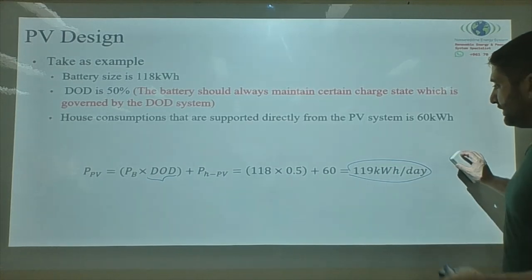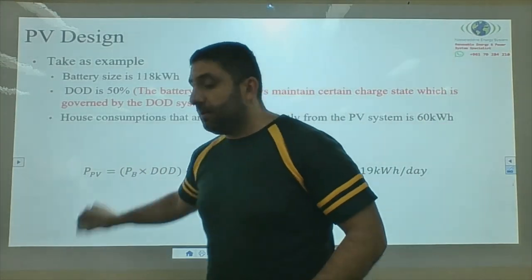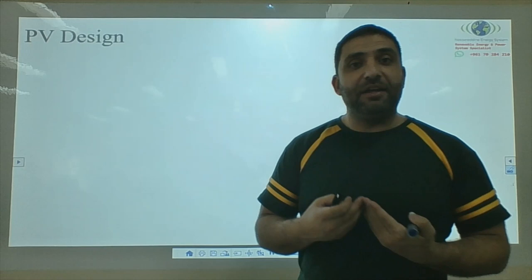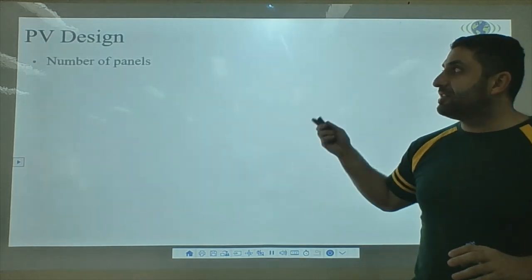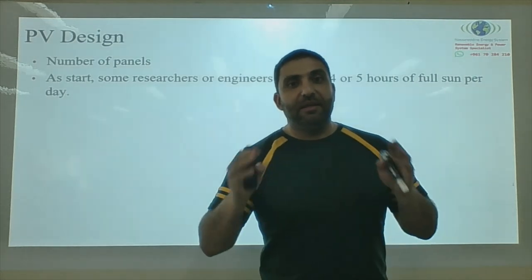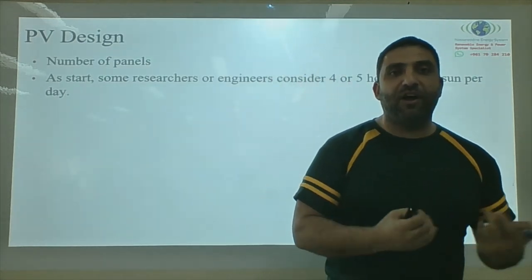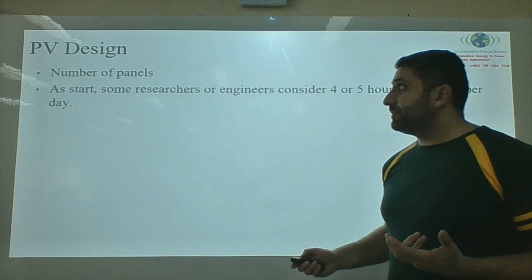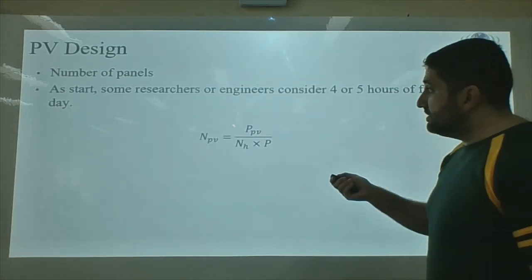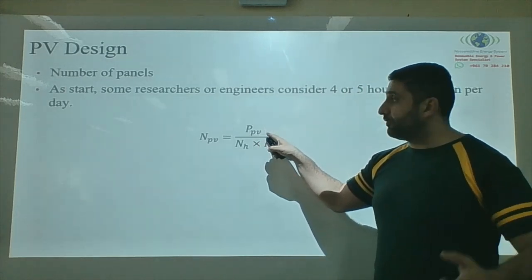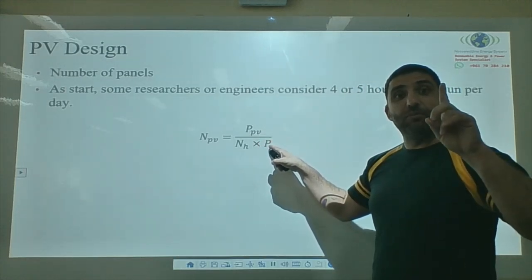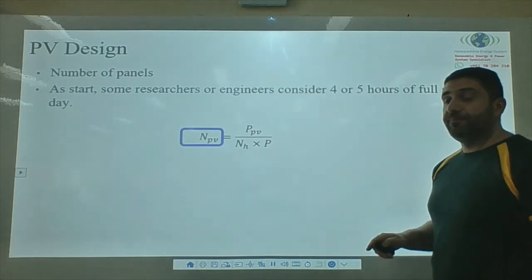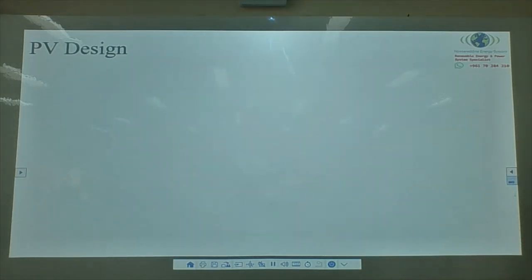With 119 kWh per day required, determine the number of sun hours available as covered in lecture two. The number of panels required equals the calculated PV power divided by the single panel power (e.g., 250 W or 360 W panels) divided by the number of daily sunlight hours. This gives the total number of panels needed for the system.